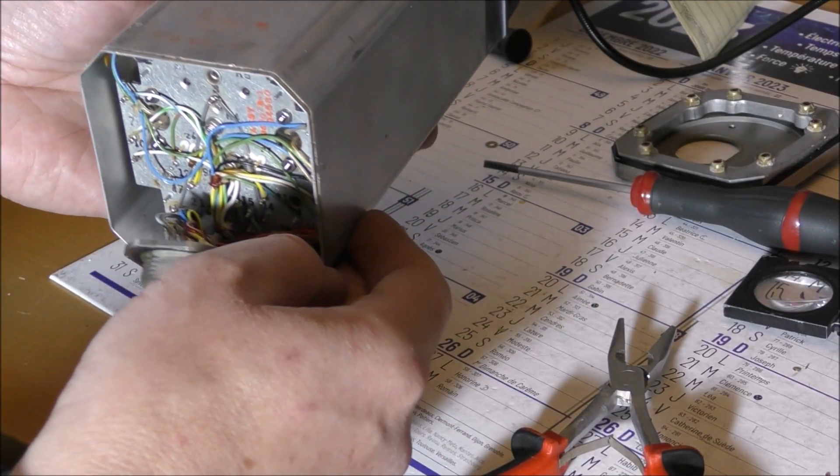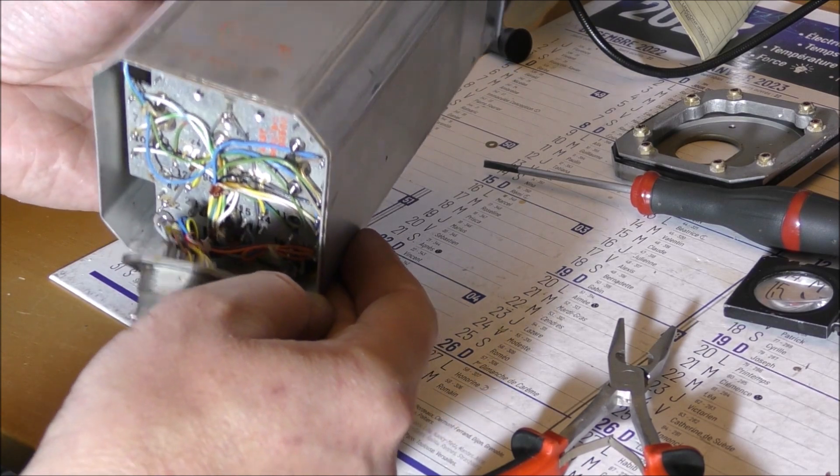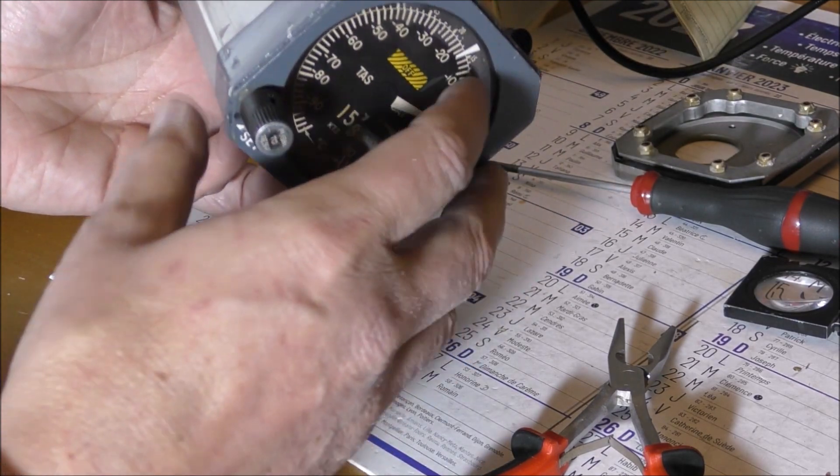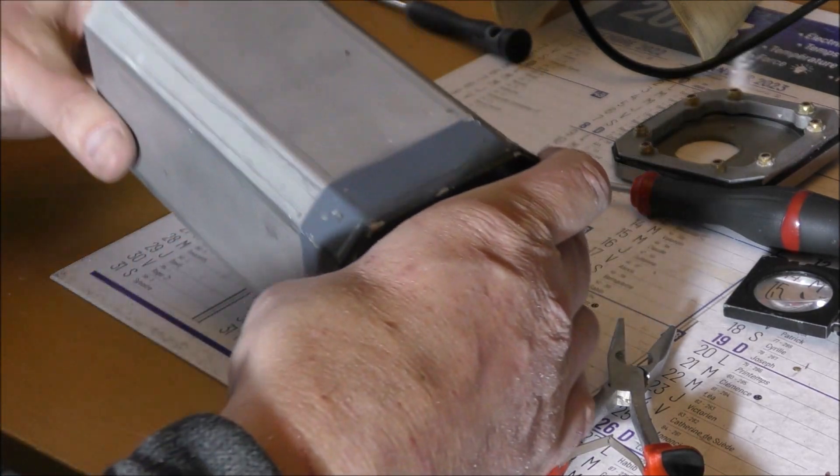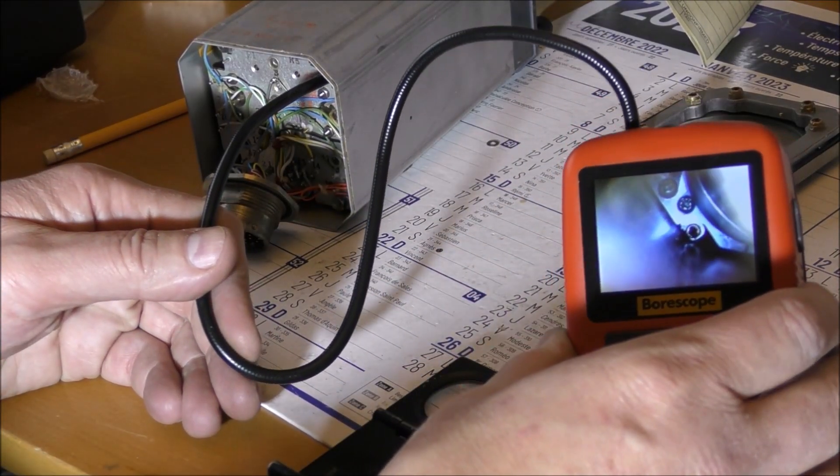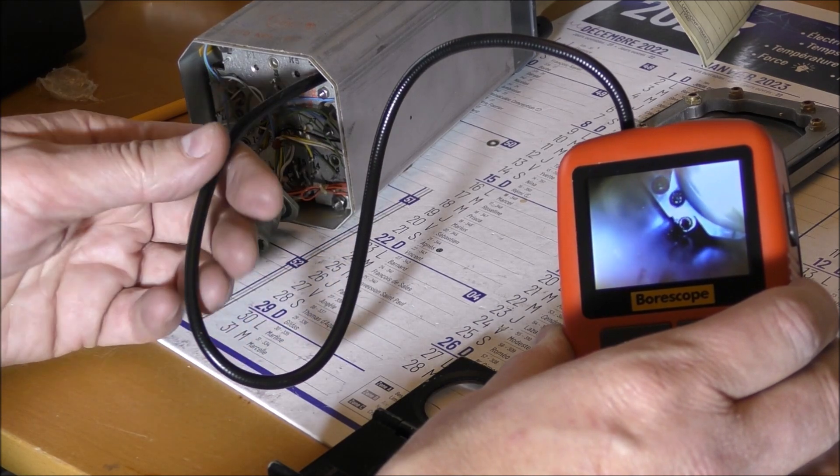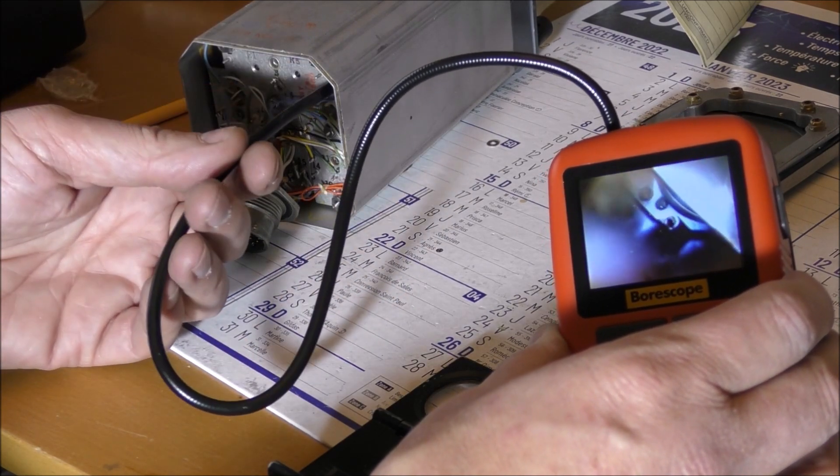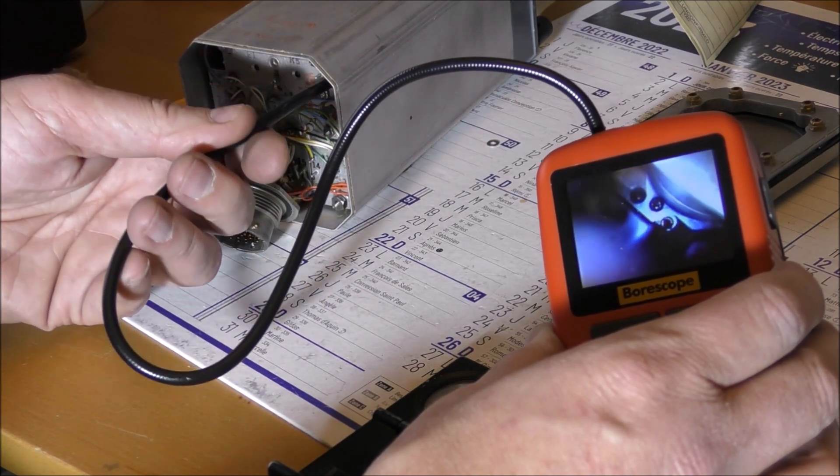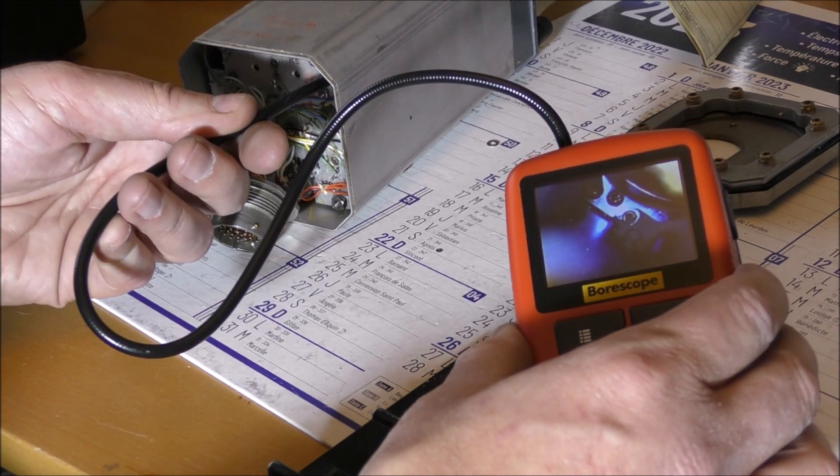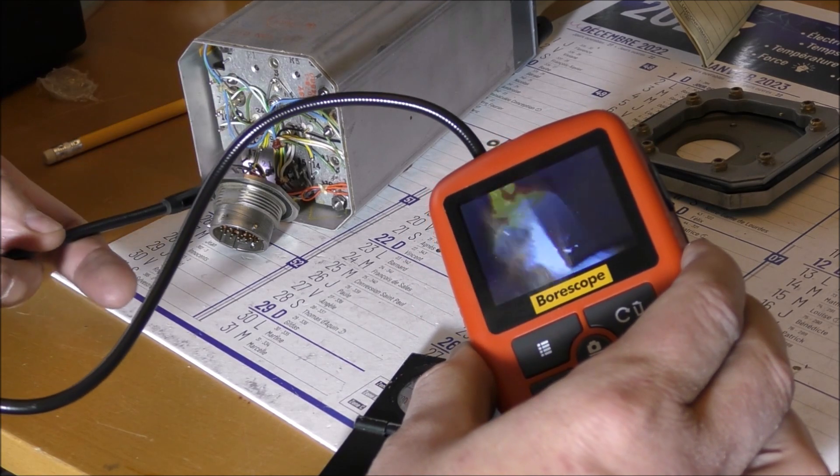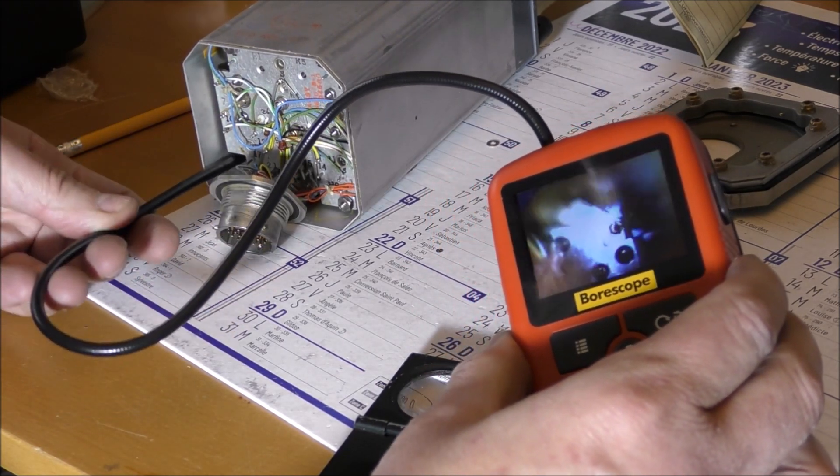What I will do, because I don't want to spend one day for that, I will cut here with the Dremel all around and I will add an adhesive after. We can see some little screws close to the front panel but they are very difficult to access. I don't have such a long screwdriver.